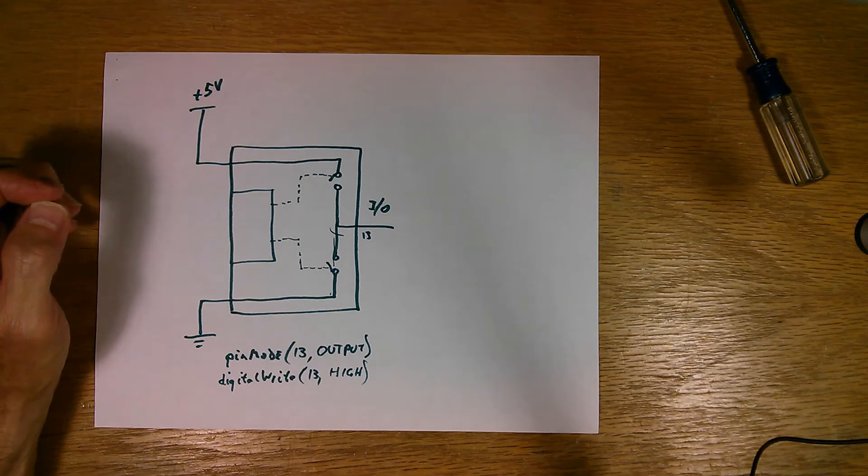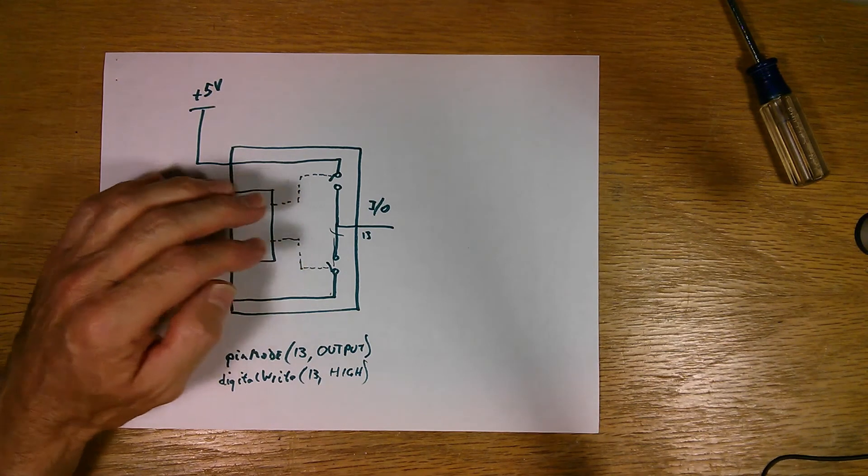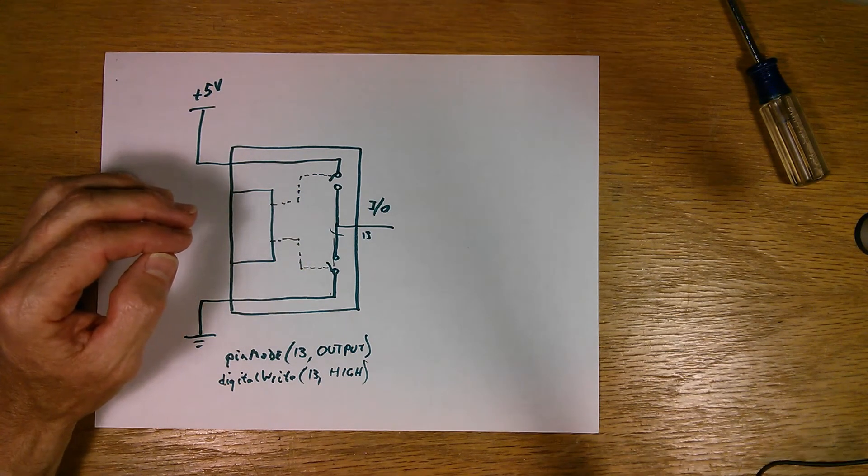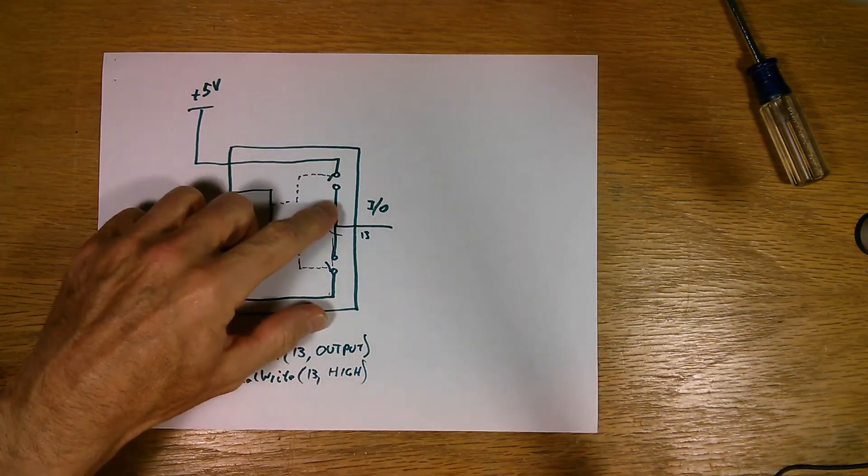If you were to even run it at 40 milliamps, you would have a good chance of destroying the chip, the microcontroller. You want to run it at something a lot less than that. 20 milliamps max is probably pretty good. Another problem with running it at higher current, it's like having another resistor in here.